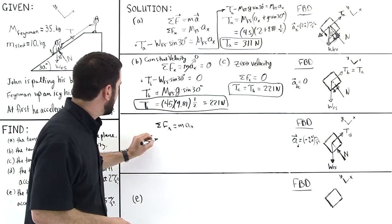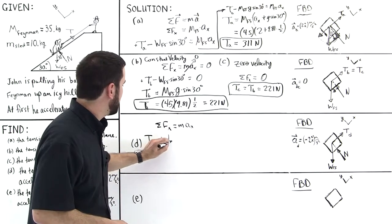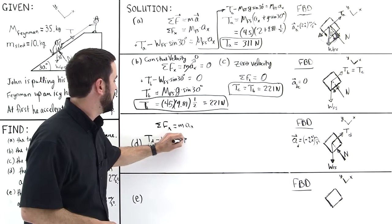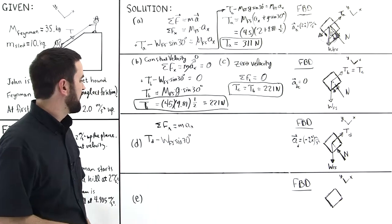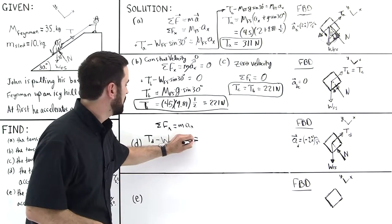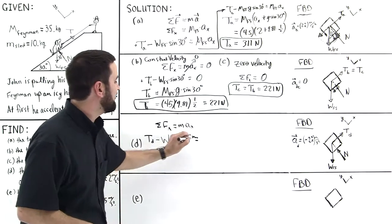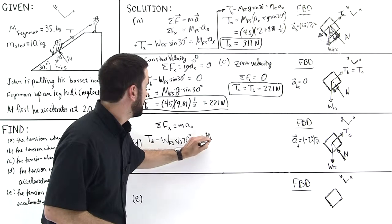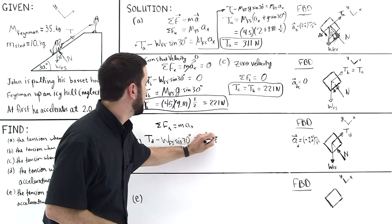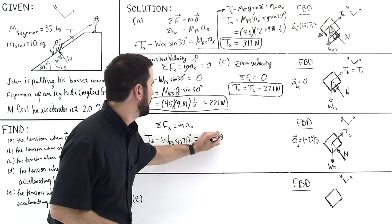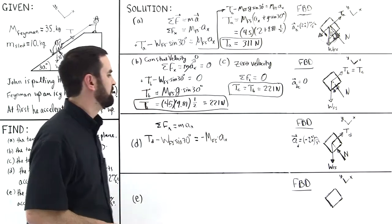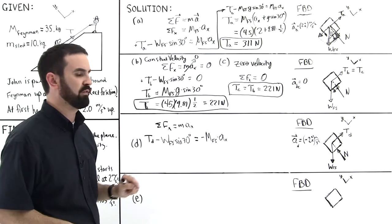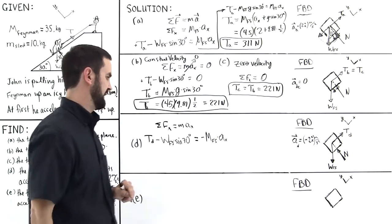So we'll start by saying the weight minus the weight of Feynman plus the sled times the sine of 30 degrees as before. And then that is equal to negative the mass of Feynman plus the sled times the acceleration in this X direction, which will be 2. And the negative, I've just factored the negative out in front, just to show that this whole term will be negative.